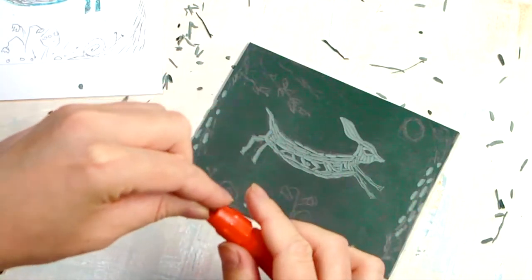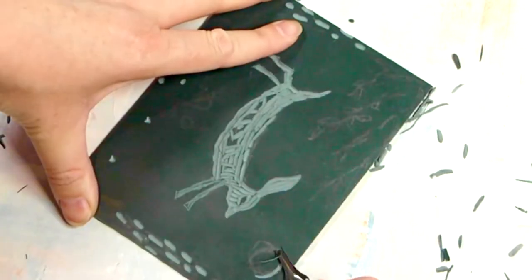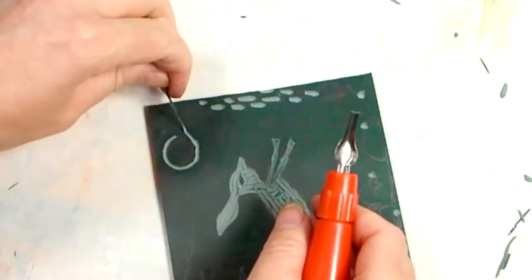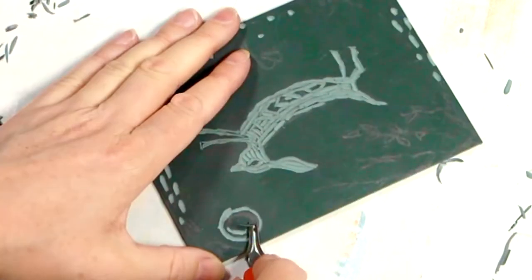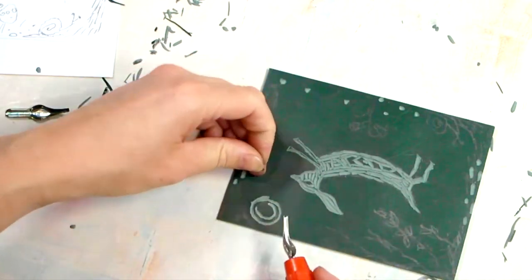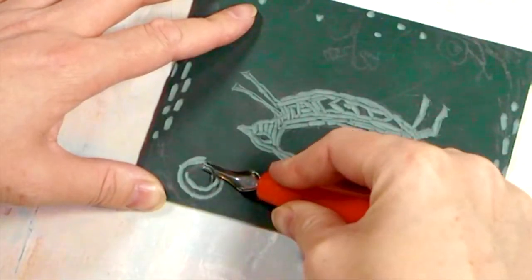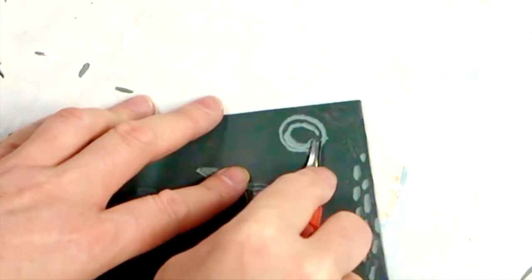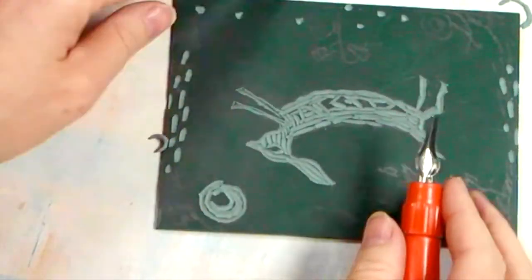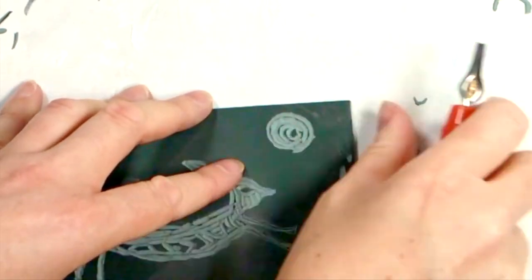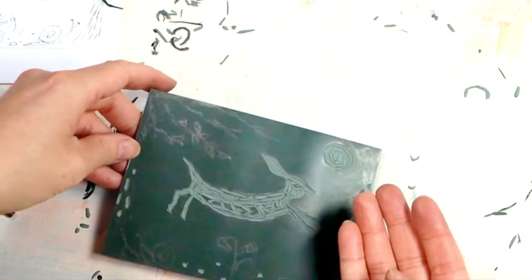Now to number two. You can see I'm cutting this midnight moon, full moon out by turning the lino and keeping my tool static. I'm going to leave some of that moon showing. I don't want it completely blanked out. I want it to feel woodcut, lino-cut.